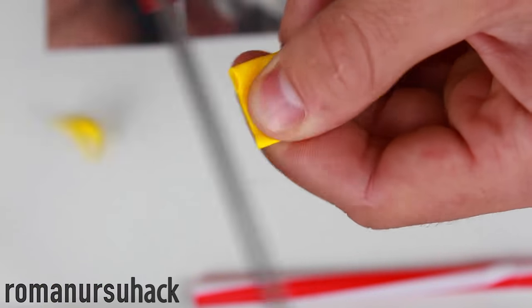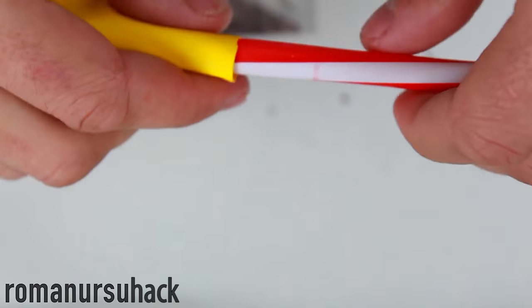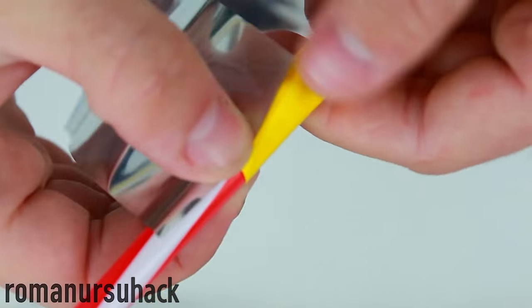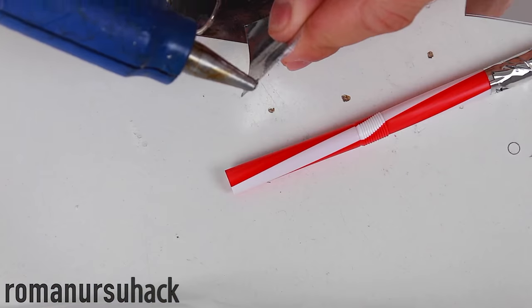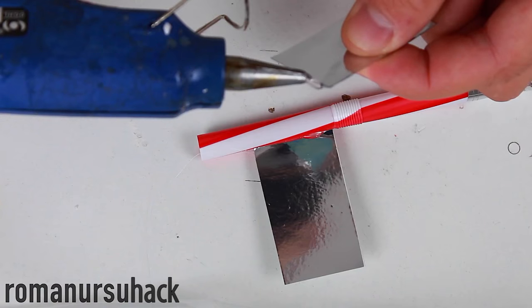Then we take our balloon, cut the rubber ring off, pull it over the straw to the mark and wrap it with sticky tape. Now we stick the wings with a thin layer of hot glue.